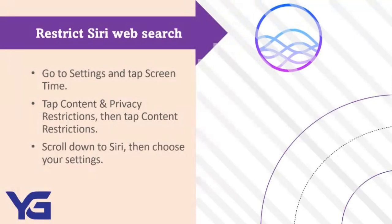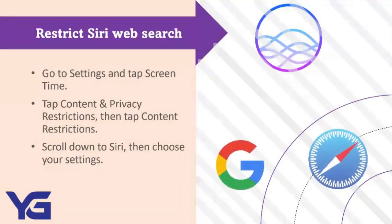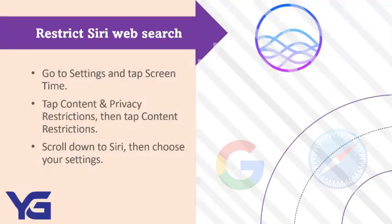Restrict Siri Web Search. To Restrict Siri Features — Step 1: Go to Settings and tap Screen Time. Step 2: Tap Content and Privacy Restrictions. Step 3: Tap Content Restrictions. Step 4: Scroll down to Siri, then choose your settings. You can restrict these Siri features: Web Search Content — Prevent Siri from searching the web when you ask a question. Explicit Language — Prevent Siri from displaying explicit language. We have done all the setup.